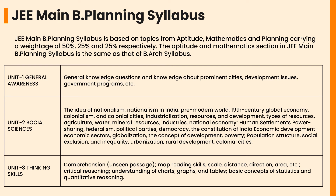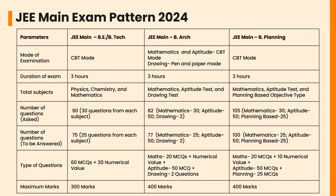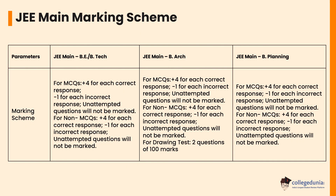Topics also include map reading skills, scale, distance, direction, and area. Since we have already discussed the JEE Main 2024 syllabus, let us also look into the exam pattern. JEE Main is held as a computer-based test. Students are given three hours to attempt the JEE Main question paper. The B.Tech paper carries a total weightage of 300 marks, while B.Architecture and B.Planning papers carry a weightage of 400 marks.